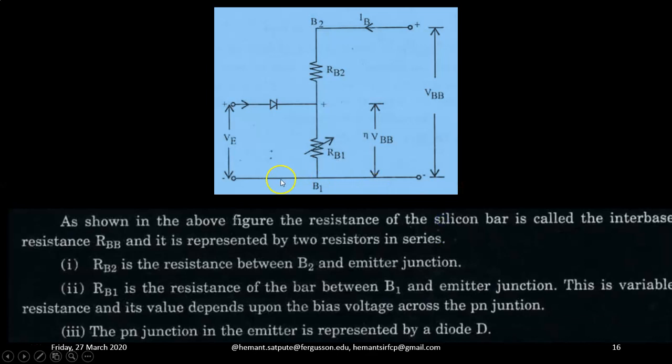Equivalent circuit of unijunction transistor UJT. So look at this circuit. As shown in the above figure, the resistance of the silicon bar is called the interbase resistance RBB. This total resistance RBB is represented by two resistors in series.